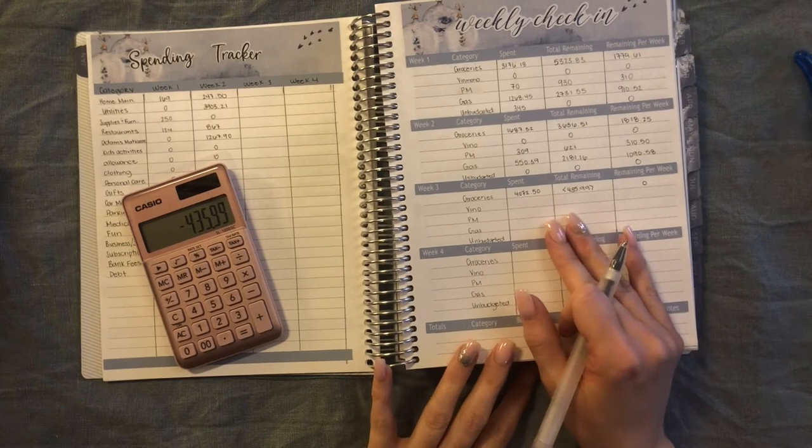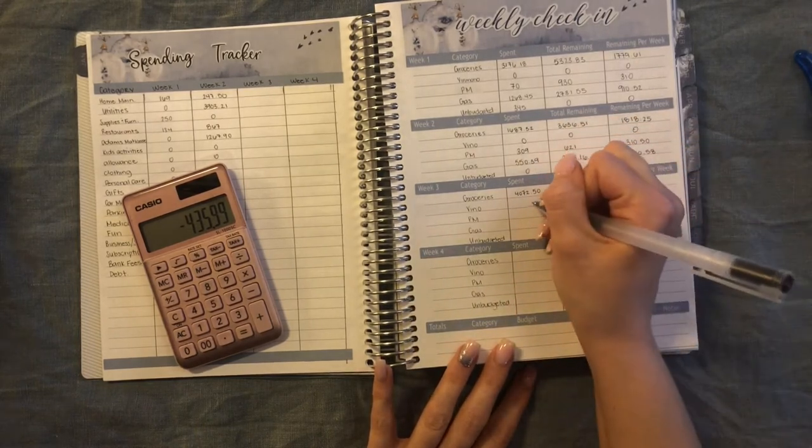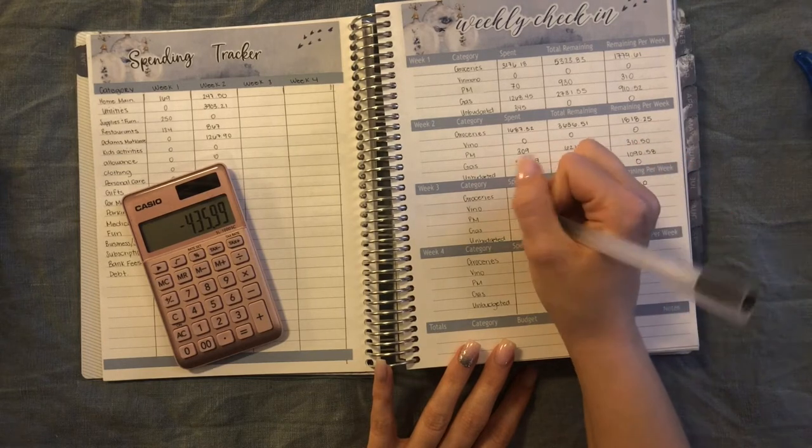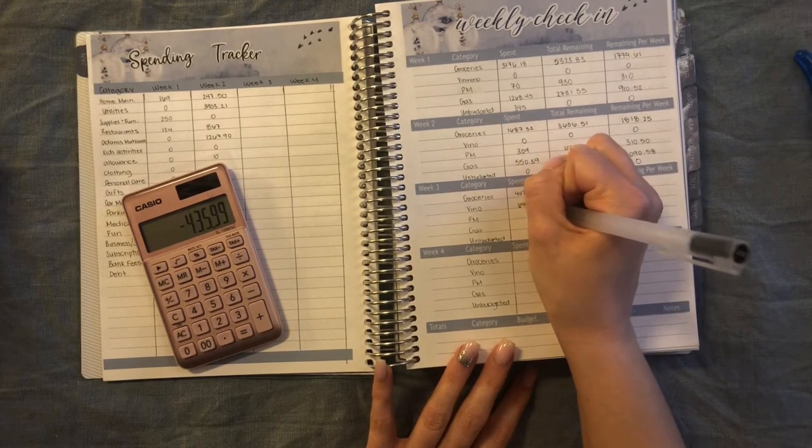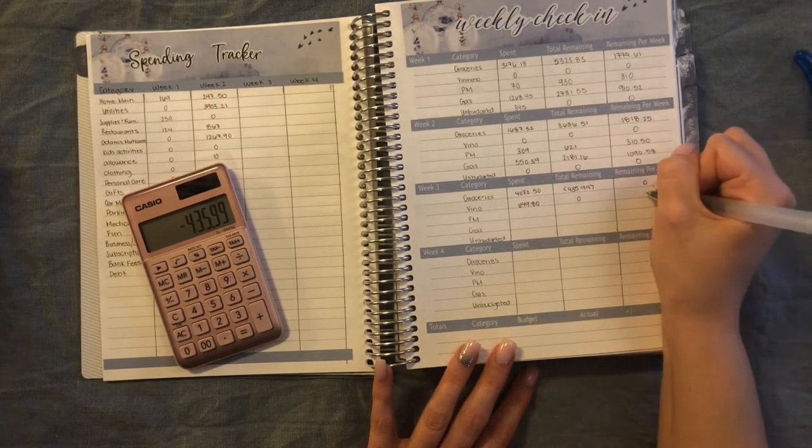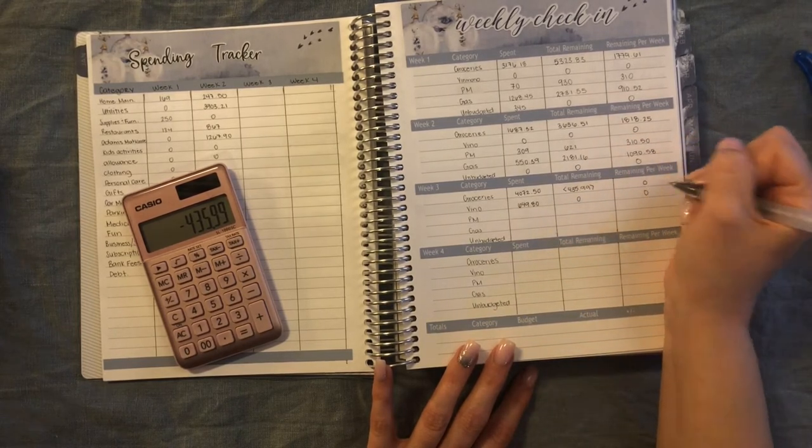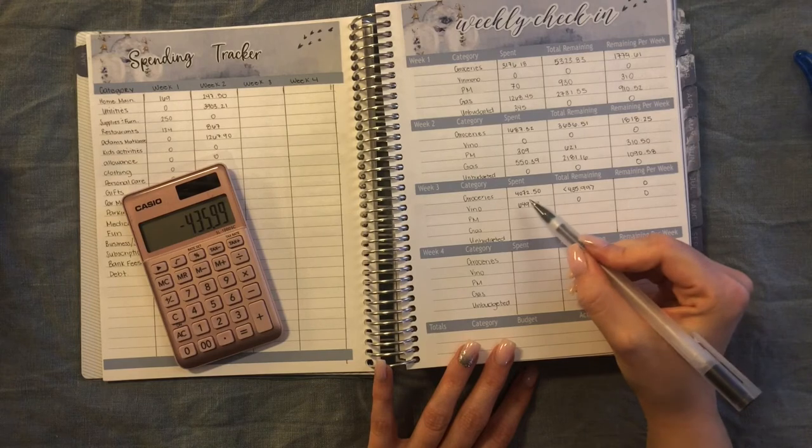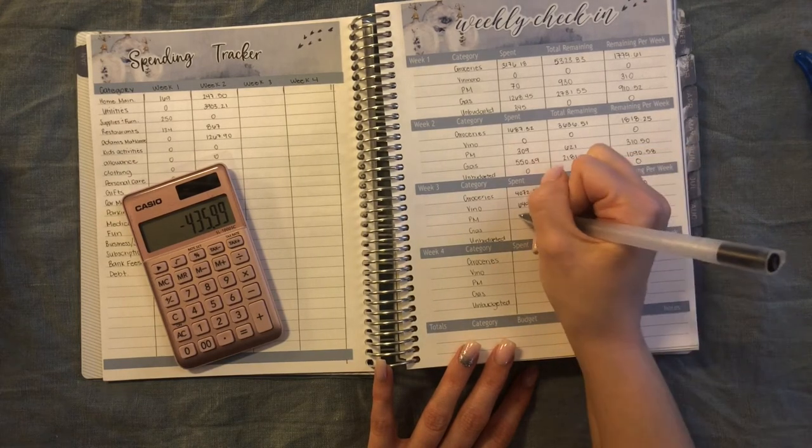At the Vino, which is the liquor store, we spent $649.80, but half of this isn't actually for us. It was for my brother-in-law, so he actually already paid us the money back for that.